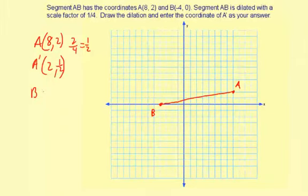So A' is (2, 1/2). And then for point B, we're starting at (-4, 0). B prime, dividing by 4, negative 4 divided by 4 is negative 1, 0 divided by 4 is 0.